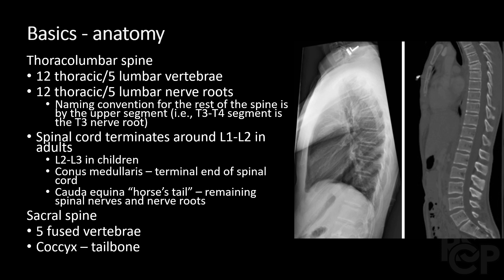Lastly, the sacral spine consists of five fused vertebrae with an attached tailbone termed the coccyx.